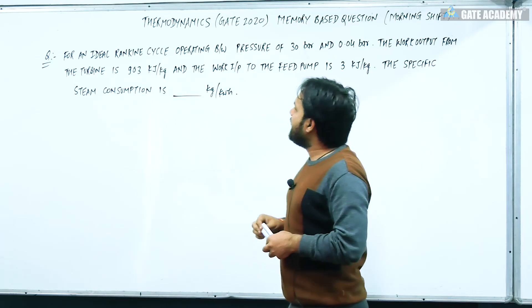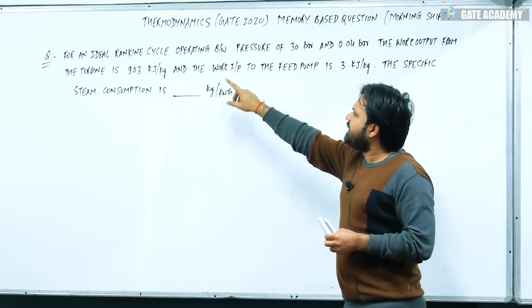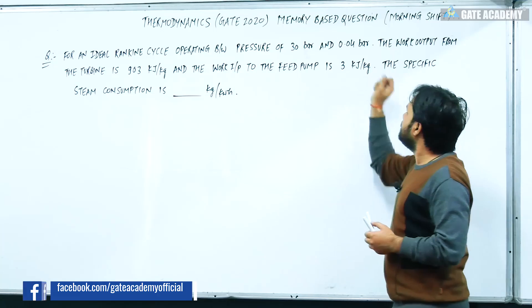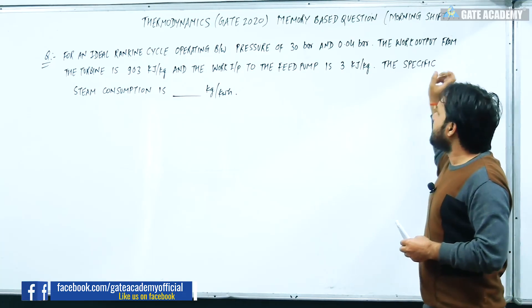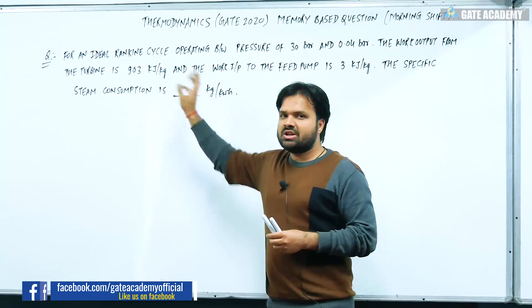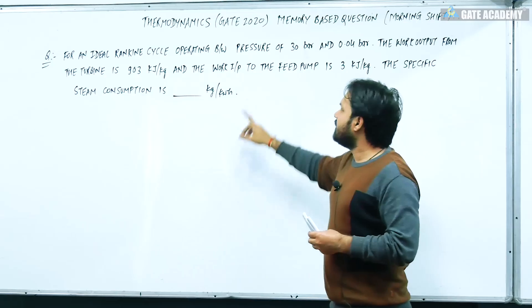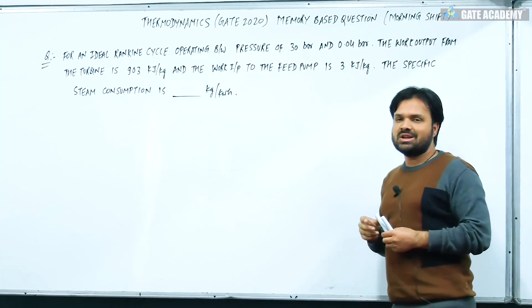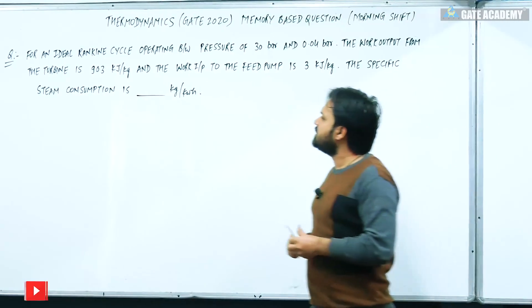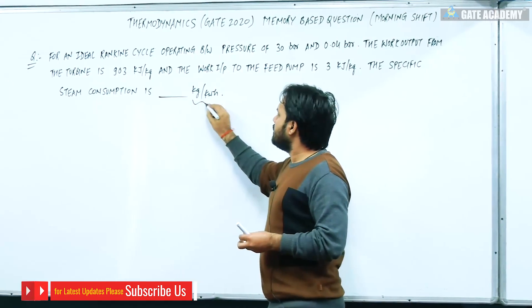For an ideal Rankine cycle operating between pressure of 30 bar and 0.04 bar, the work output from the turbine is 903 kg per kg and work input to the feed pump is 3 kg per kg. The specific steam consumption kg per kilowatt hour.